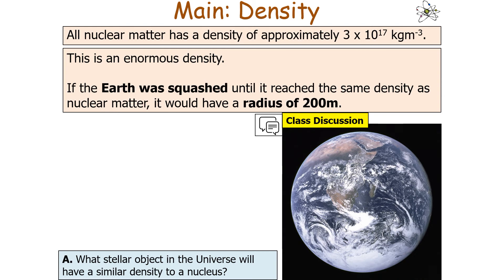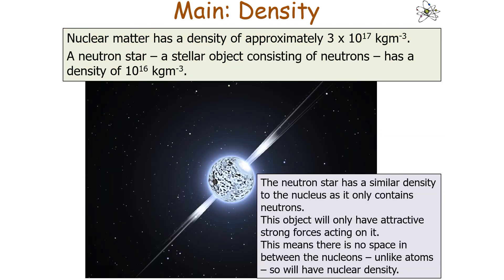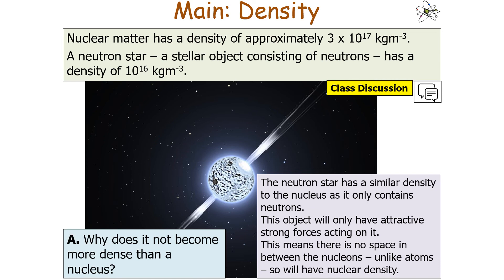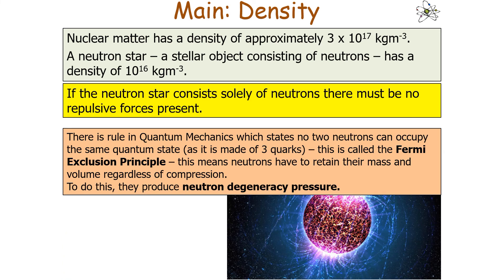The stellar object with a similar density to a nucleus is a neutron star, which has a very similar density to the nucleus since it only contains neutrons. Only the attractive strong force acts on it, so there is no space between the nucleons unlike in atoms, giving it nuclear density. Nuclear matter has a density of approximately 3 × 10¹⁷ kg/m³, whilst a neutron star has a density on the order of 10¹⁶ kg/m³. There is a rule in quantum mechanics — the Fermi exclusion principle — stating that no two neutrons can occupy the same quantum state, meaning neutrons retain their mass and volume regardless of compression.